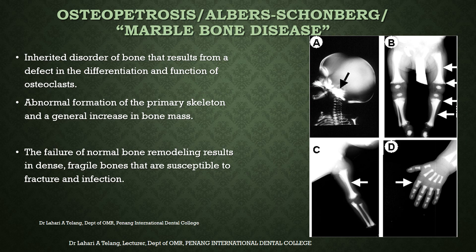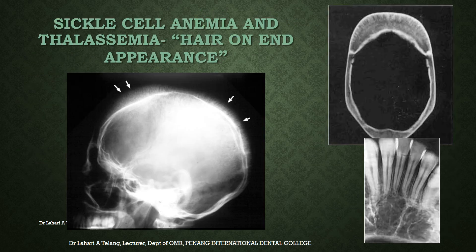Osteopetrosis, also called marble bone disease, is a rare inherited disorder resulting from a defect in differentiation and function of osteoclasts, causing abnormal formation of primary skeleton and a general increase in bone mass. Failure of normal bone remodeling results in dense, fragile bones susceptible to fracture and infection. Sickle cell anemia and thalassemia give the appearance of hair-on-end on the skull, caused by the superficial surface of the dura appearing grazed, along with increased trabecular spaces and wide marrow spaces — a classical feature of these conditions.